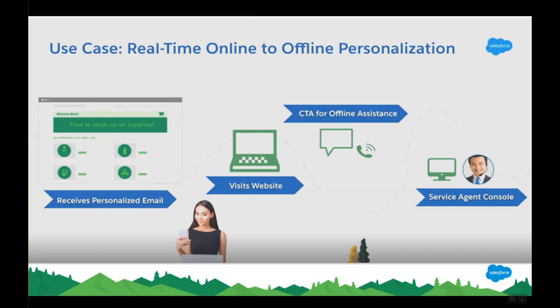This can lead to better customer experience and loyalty. Let's take up a use case that showcases real-time online to offline personalization. In this example, Rhea receives a personalized email recommending products she browsed in the past. From the email she gets redirected to the website and browses a few more products. After some time, she receives an option to chat or call with a service agent. She calls the call center and agent John picks up. With Interaction Studio connected to Salesforce, agent John has real-time access to Rhea's online behavioral history and can proactively provide assistance, sharing the best promotions and relevant product recommendations.